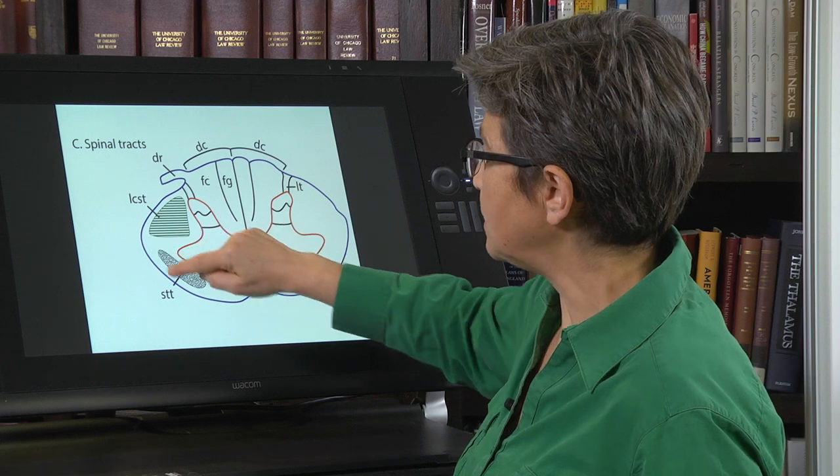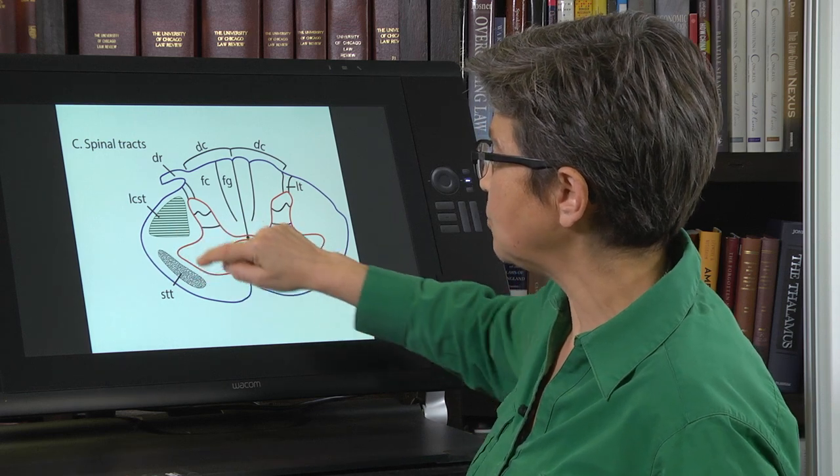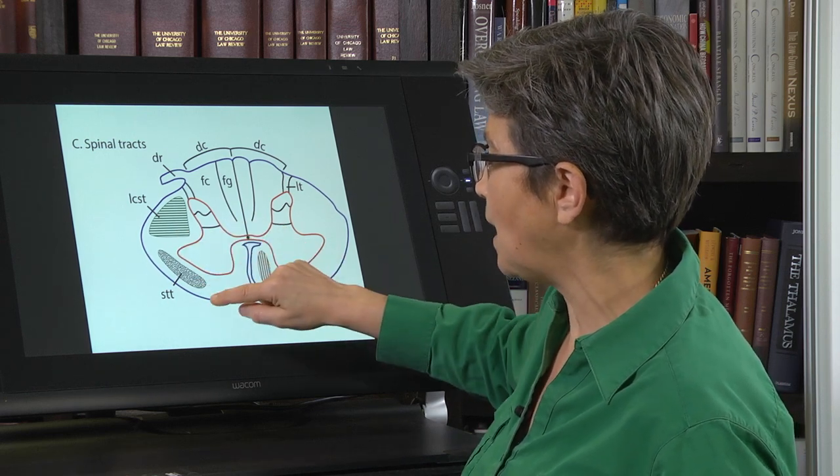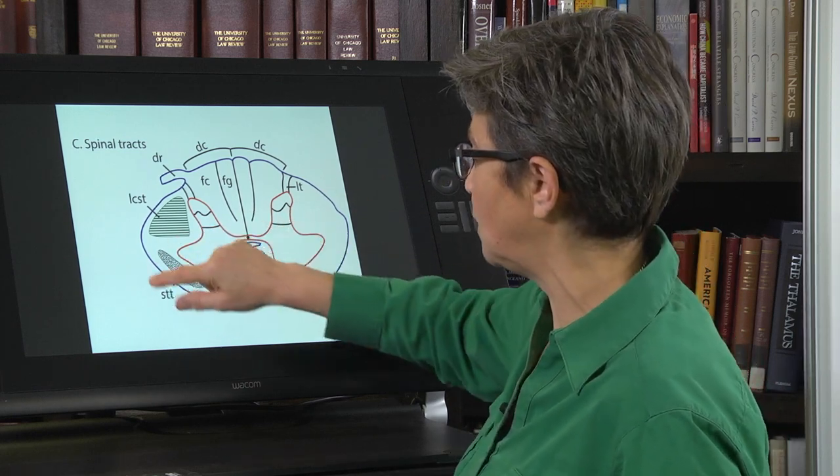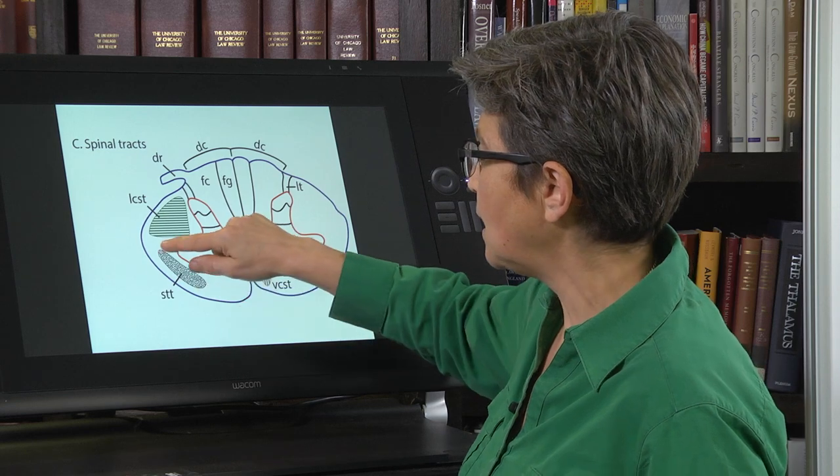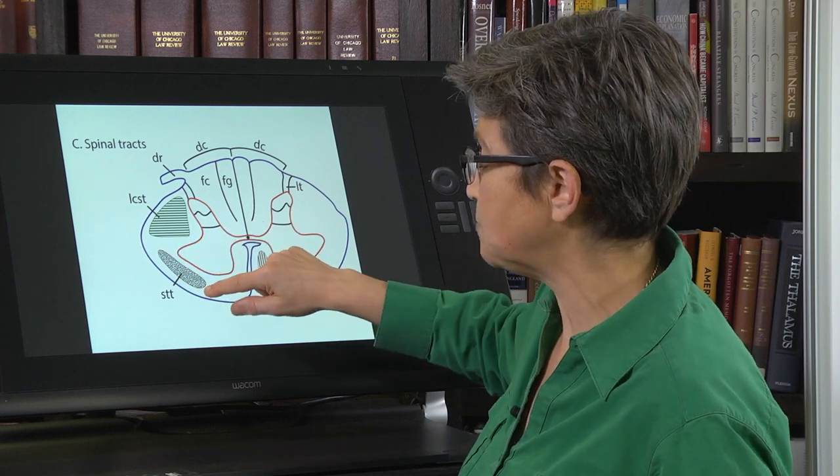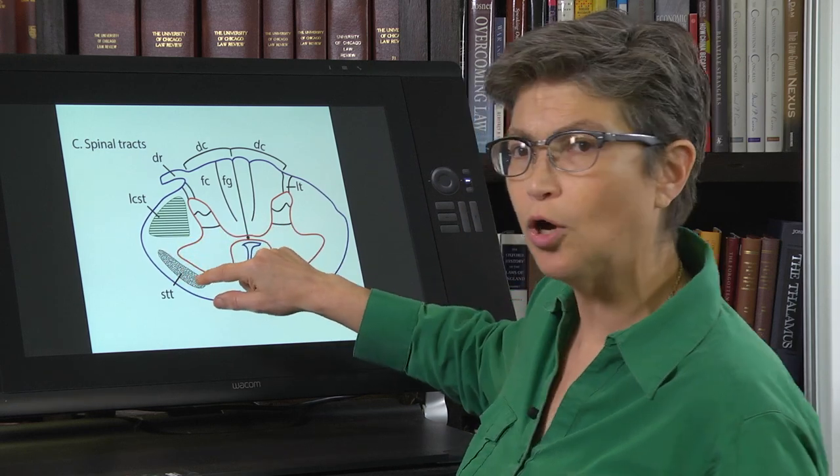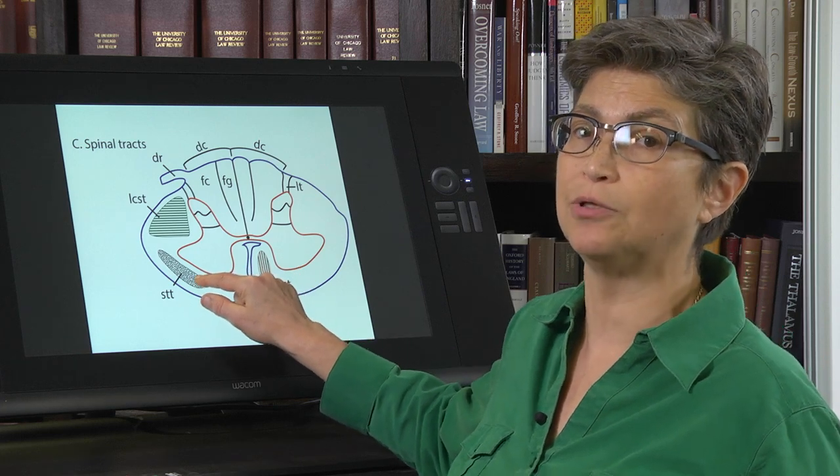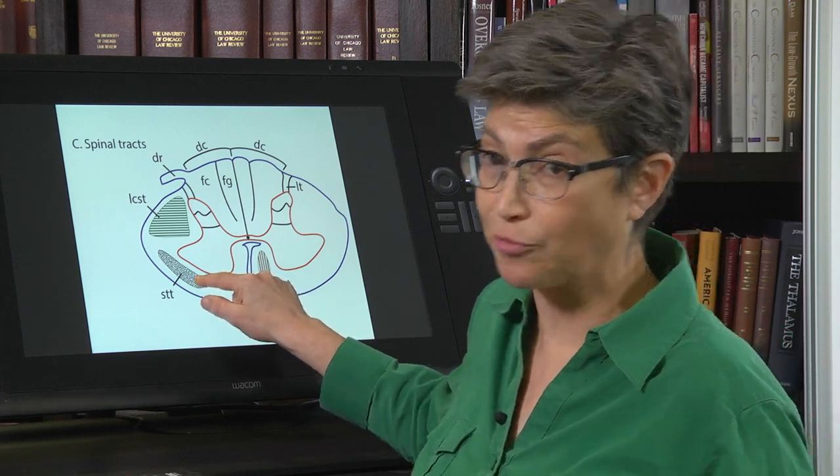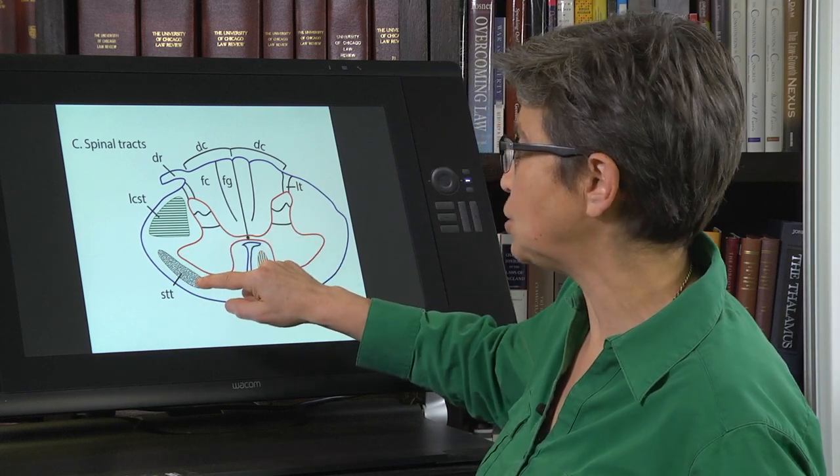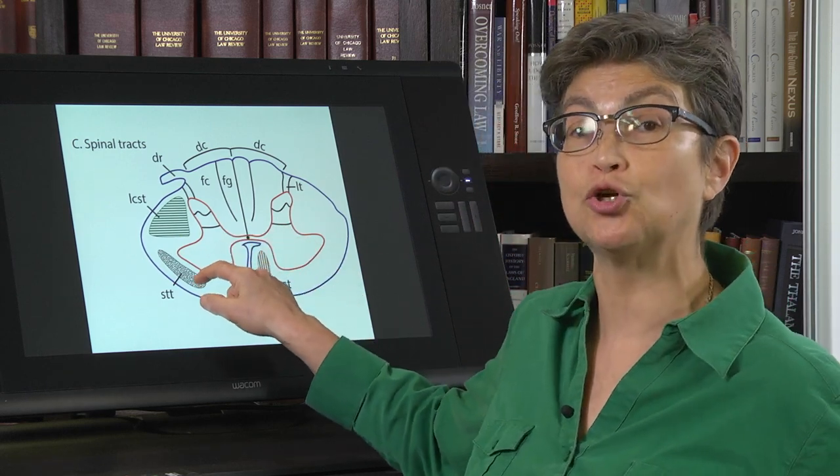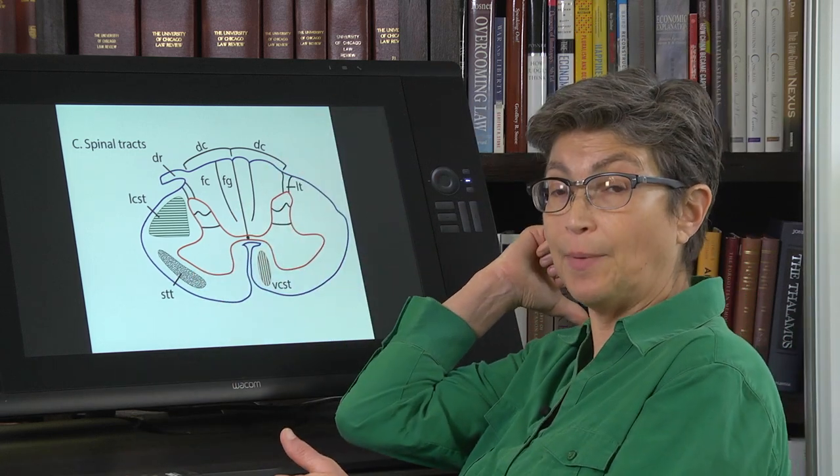Down here in the anterolateral quadrant of the white matter, anterolateral to clinicians, ventrolateral to basic scientists, travels the spinothalamic tract. This is also called sometimes by some people the anterolateral system or the anterolateral pathway. I'll call it the spinothalamic tract. So this is carrying information about pain and temperature from the opposite side of the body.